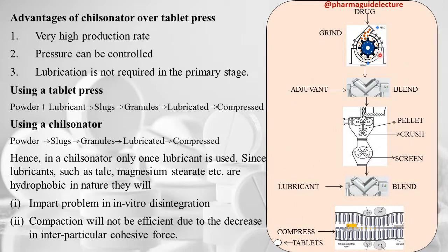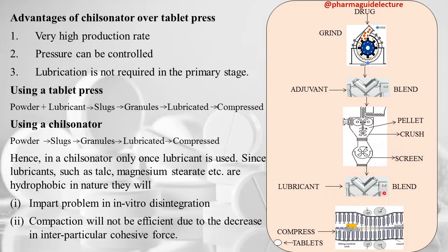The steps in dry granulation are: the drug is granulated, tablet ingredients and API are blended, granules are formed via the Chilsonator, granule lubrication is added, blended, and finally compacted into tablets.